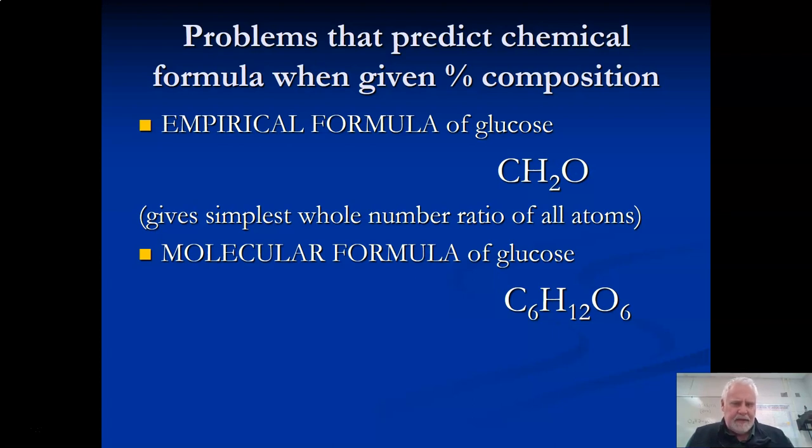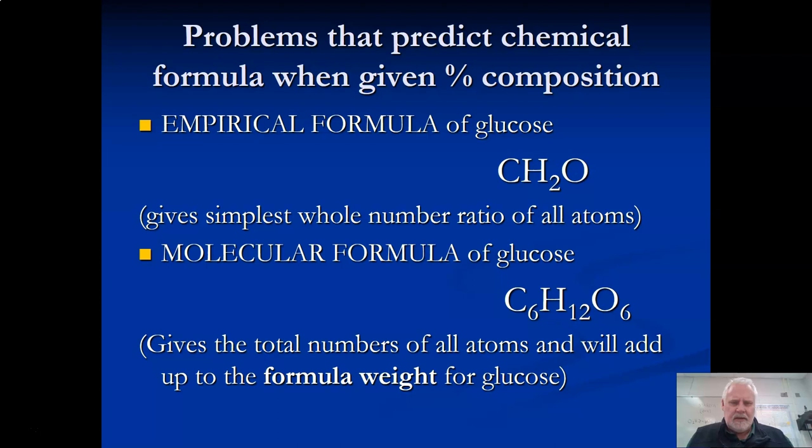That's a good thing for us to know - the difference between empirical and molecular formula. The molecular formula will give the total number of all atoms and will add up to the formula weight for glucose. That's what glucose really is: C6H12O6, not CH2O. When we do these problems, we're always going to get the empirical formula first - the simplest whole number ratio - and then we'll use the formula weight to take it a step further.